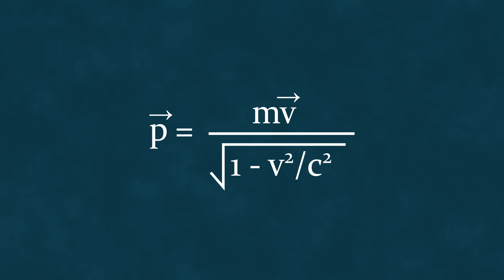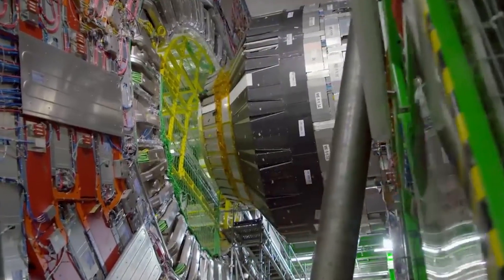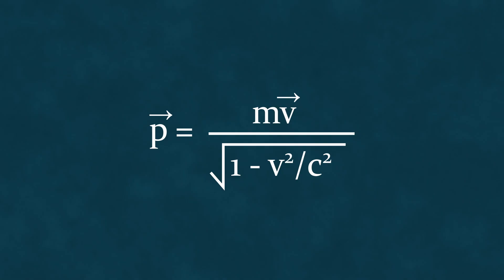However, the relativistic formula is the correct and precise one, which, by the way, has been confirmed by experiments in particle accelerators, where we actually accelerate these particles to speeds very close to the speed of light.